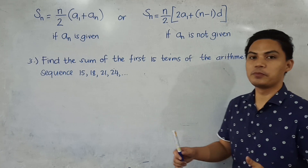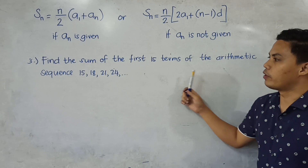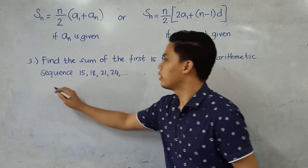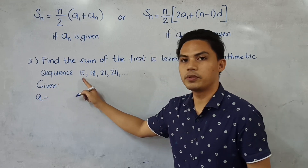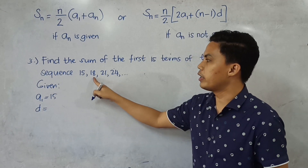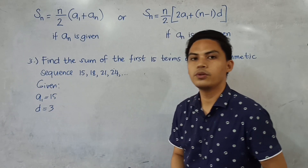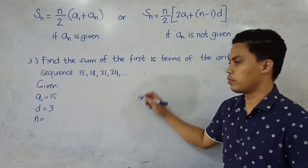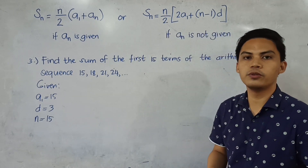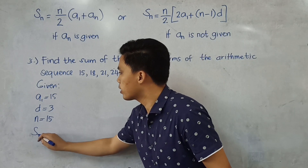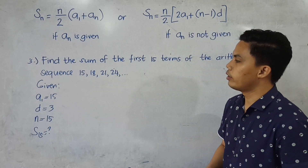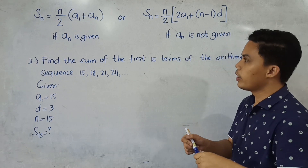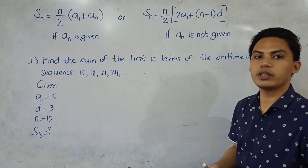Now for the last problem, problem number 3: find the sum of the first 15 terms of the arithmetic sequence 15, 18, 21, 24, and so on. Writing the given: A sub 1 equals 15; the common difference d equals 18 minus 15 equals 3; and n equals 15, since we're finding the sum of the first 15 terms. We're looking for S sub 15. Since the last term is not given, we will use the second formula again.